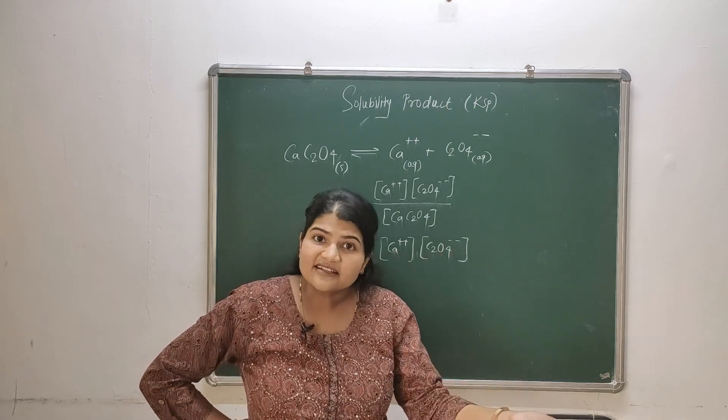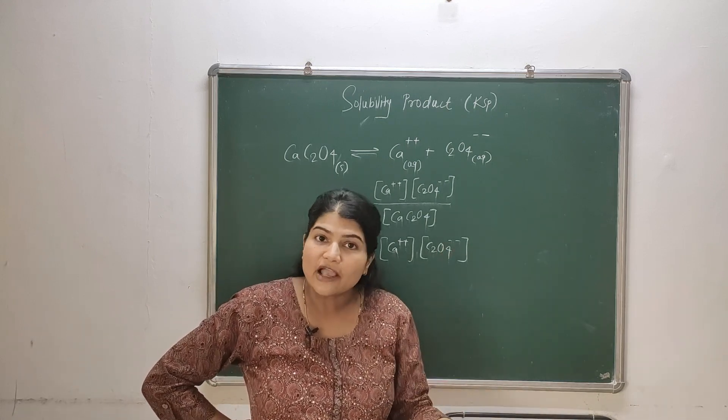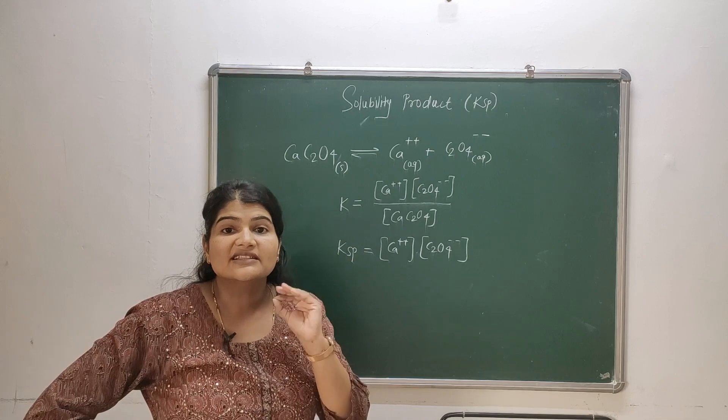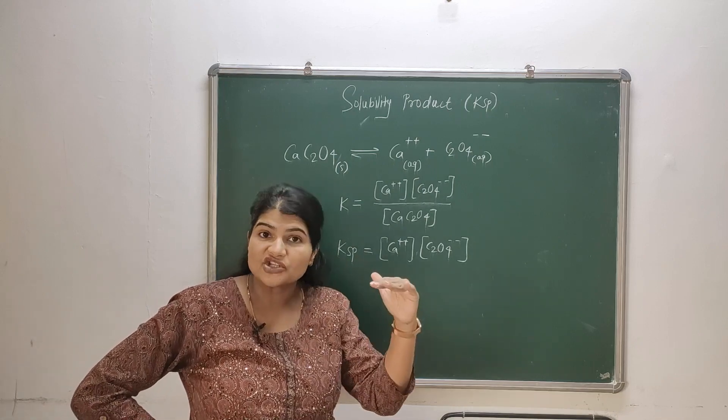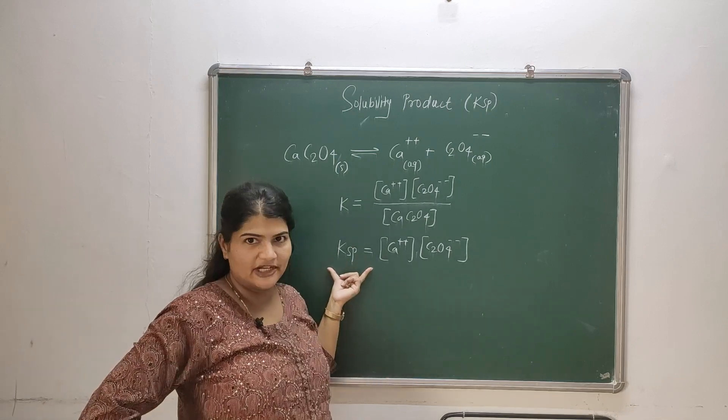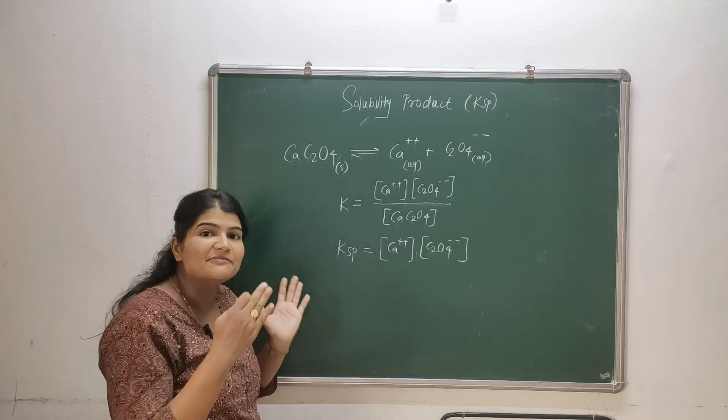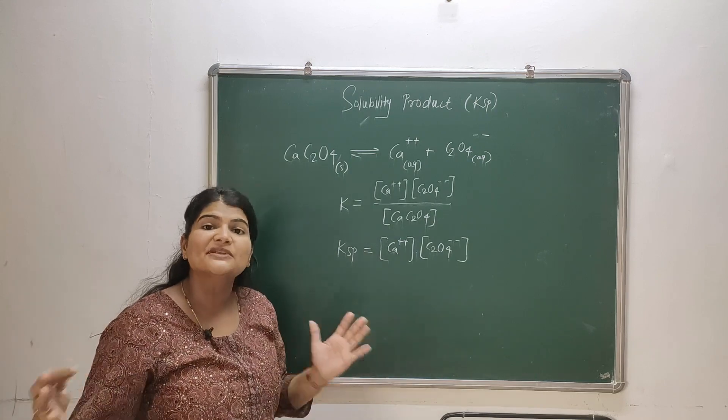So when I started just dissolving the solute, at that point if I count the ionic product it will be ionic product. At any later stage if I calculate it will be an ionic product. Only when we consider the ionic product at saturation, that will be called as solubility product.